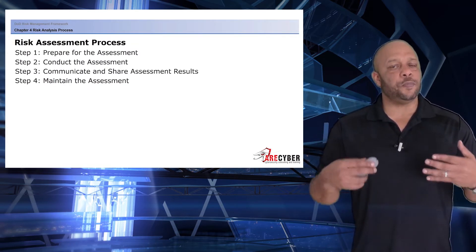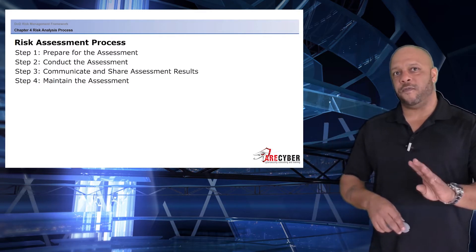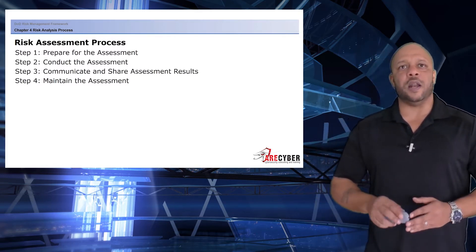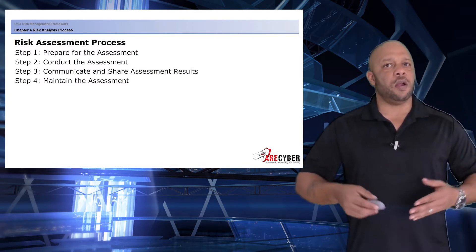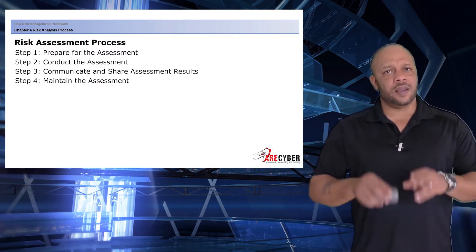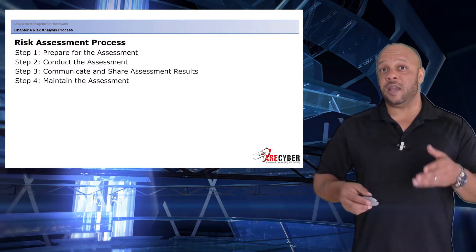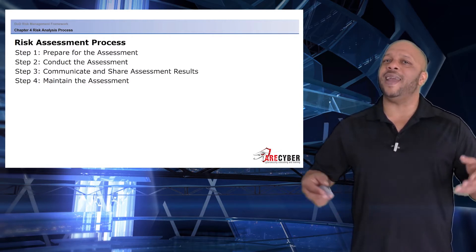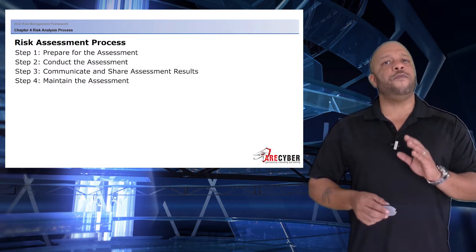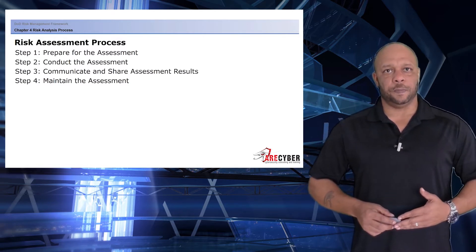The risk assessment process is composed of four primary steps: Step 1, prepare for the assessment; Step 2, conduct the assessment; Step 3, communicate and share assessment results; and Step 4, maintain the assessment.